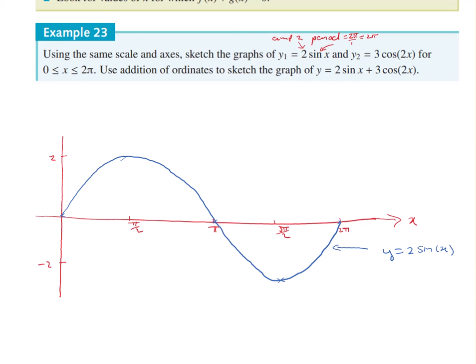Now we're going to draw in y equals 3 cos 2x. So for this one, amplitude is 3, period is 2π over 2, so 2π/2 is just π.